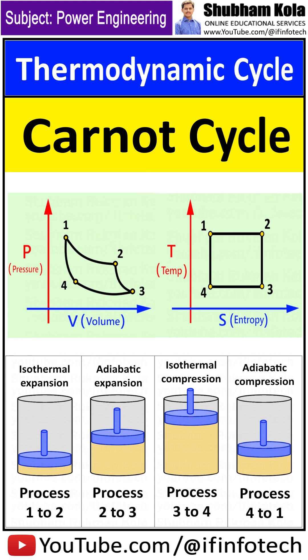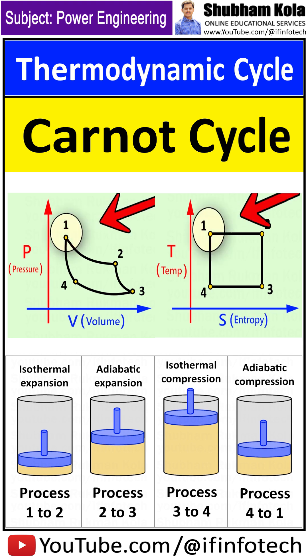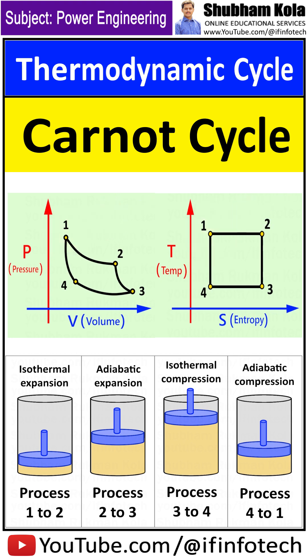Reversible means the direction can be returned to its original position. Any actual cycle, while operating between the same temperatures, cannot have efficiency more than that of the Carnot cycle. So the Carnot cycle is used for comparing actual cycles.